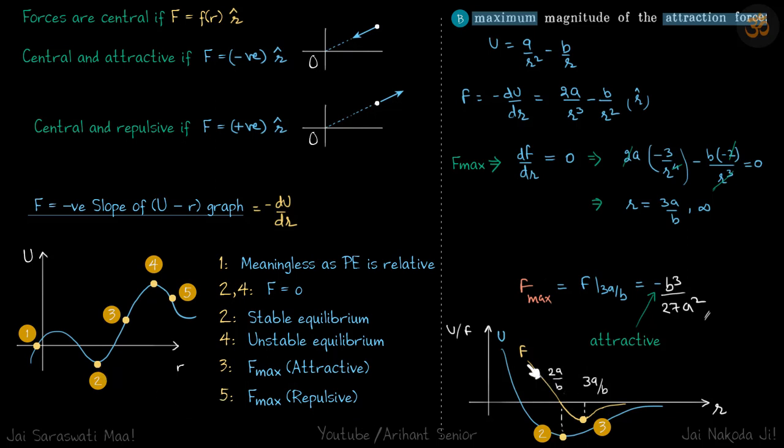From the force graph also, if you move a bit towards right, force becomes negative. If you move left, force is positive. The forces will try to bring back the particle into its equilibrium position.